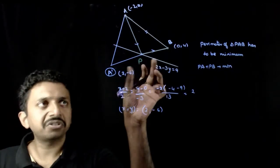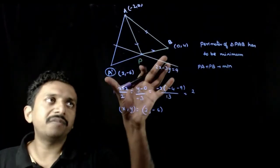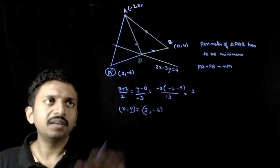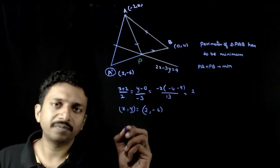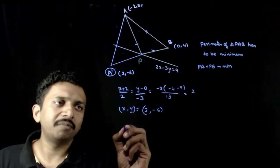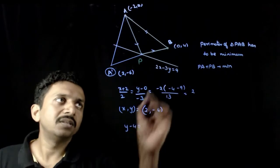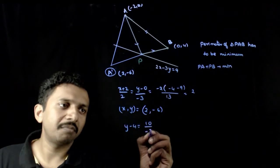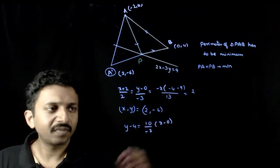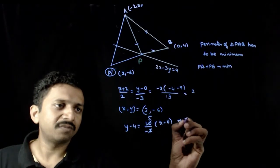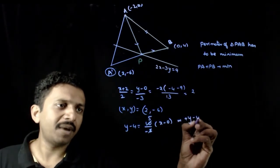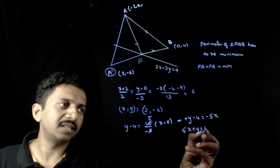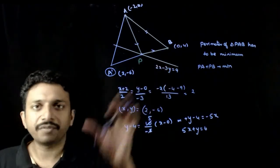Now the point P for which PA plus PB is minimum is nothing but the point of intersection of A' B and the line 2x minus 3y equals 9. What is the equation of line A' B? A' B is y minus 4 equals slope (4 plus 6, 10) by (0 minus 2 is -2) times (x minus 0). This implies y minus 4 equals -5x, or 5x plus y equals 4. This is the equation of A' B.